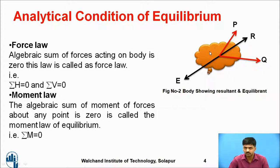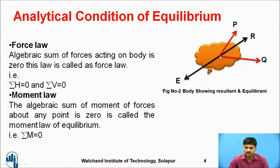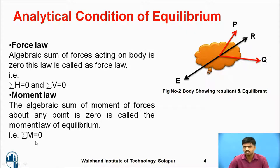Similarly, we consider the moment law: the summation of moments equals zero. Over the same system of forces, the algebraic sum of moments of forces about any point is zero. This is called the moment law of equilibrium. So we use summation H equals zero, summation V equals zero for the force law, and summation M equals zero for the moment law.